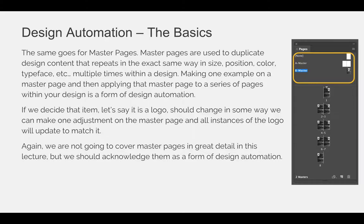The same goes for master pages. Master pages are used to duplicate design content that repeats in the exact same way — size, position, color, typeface, etc. — multiple times within a design. Making one example on a master page and then applying that master page to a series of pages is a form of design automation. If we decide that an item, let's say it's a logo, should change in some way, we can make one adjustment on the master page and all instances of the logo will update to match it.